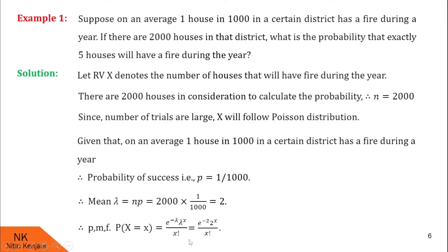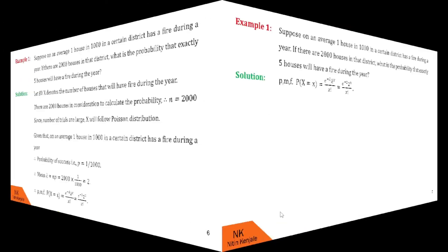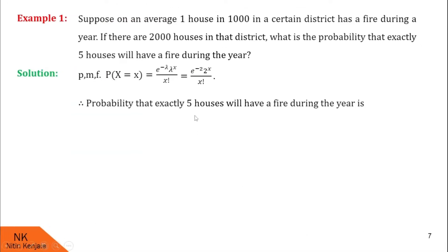Now using this PMF, we will find the probability that exactly 5 houses will have fire during the year. P(X = 5) is given by e raised to minus 2, multiplied by 2 raised to 5, upon 5 factorial. After using a calculator, we find P(X = 5) is 0.036. So this is the probability that exactly 5 houses out of 2000 will have fire during the year.